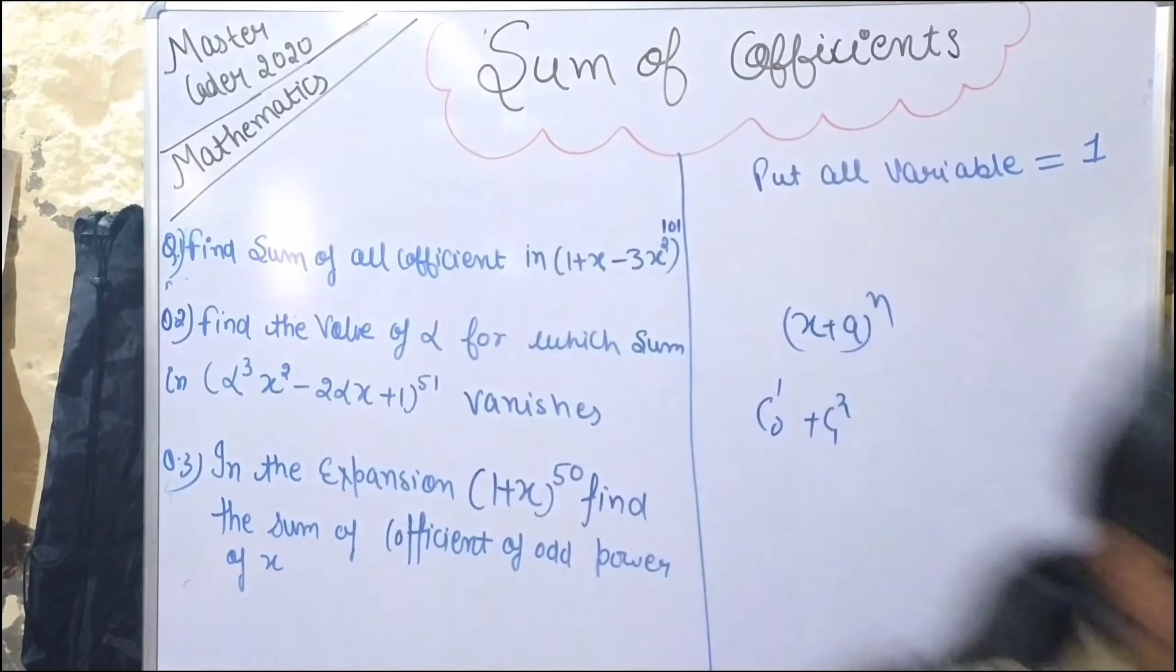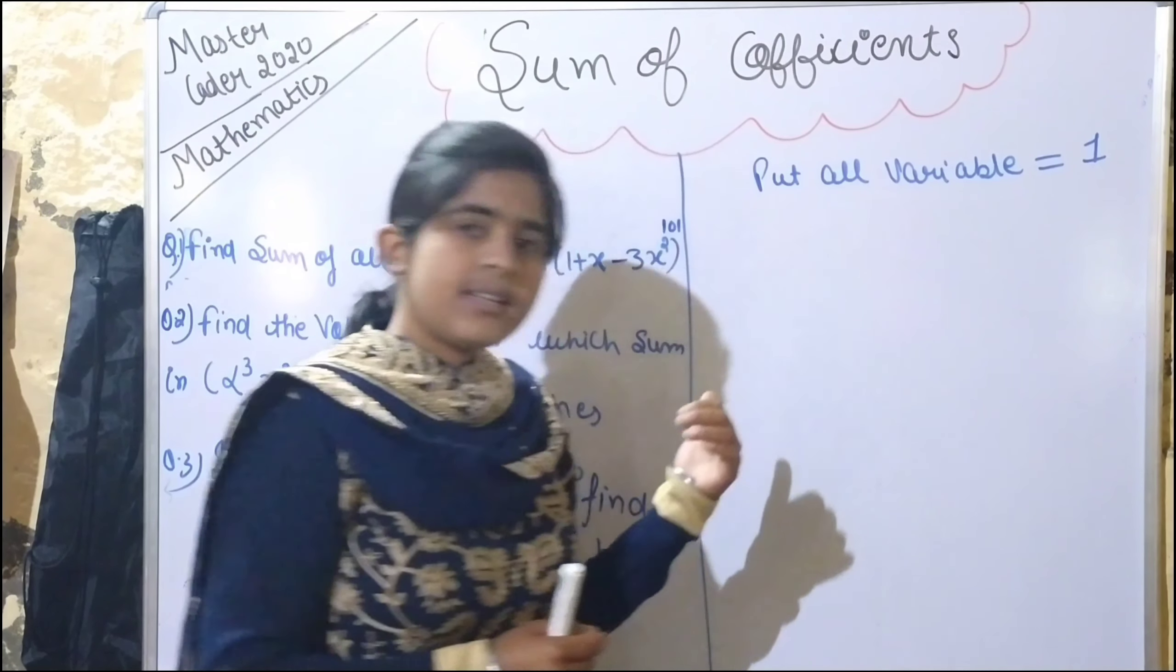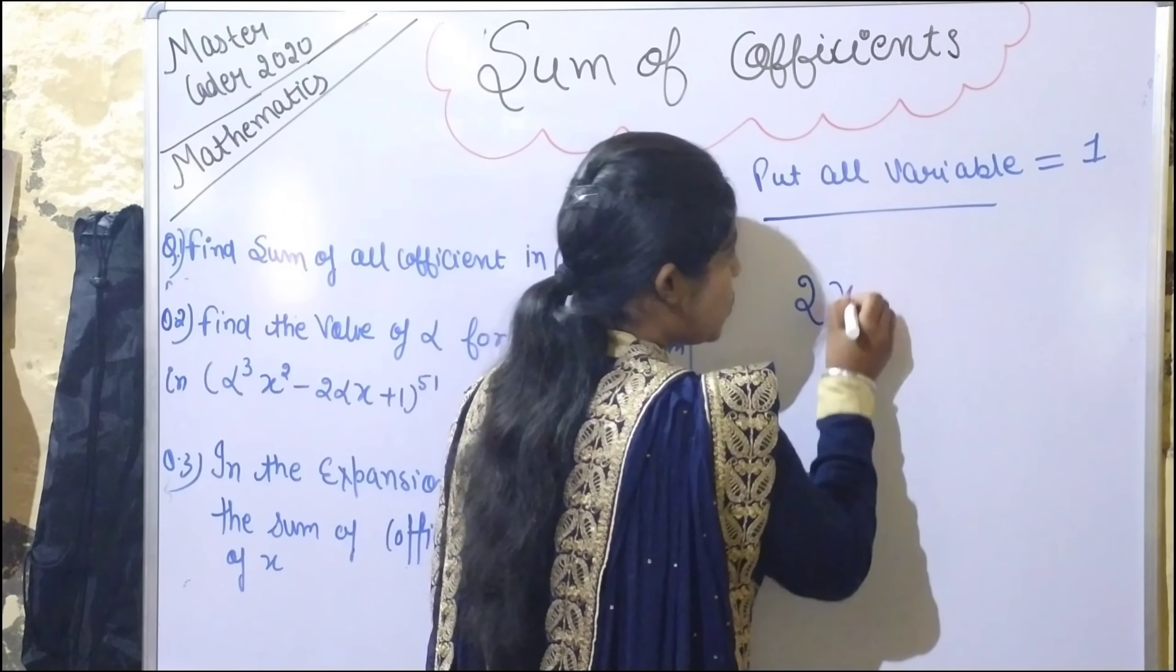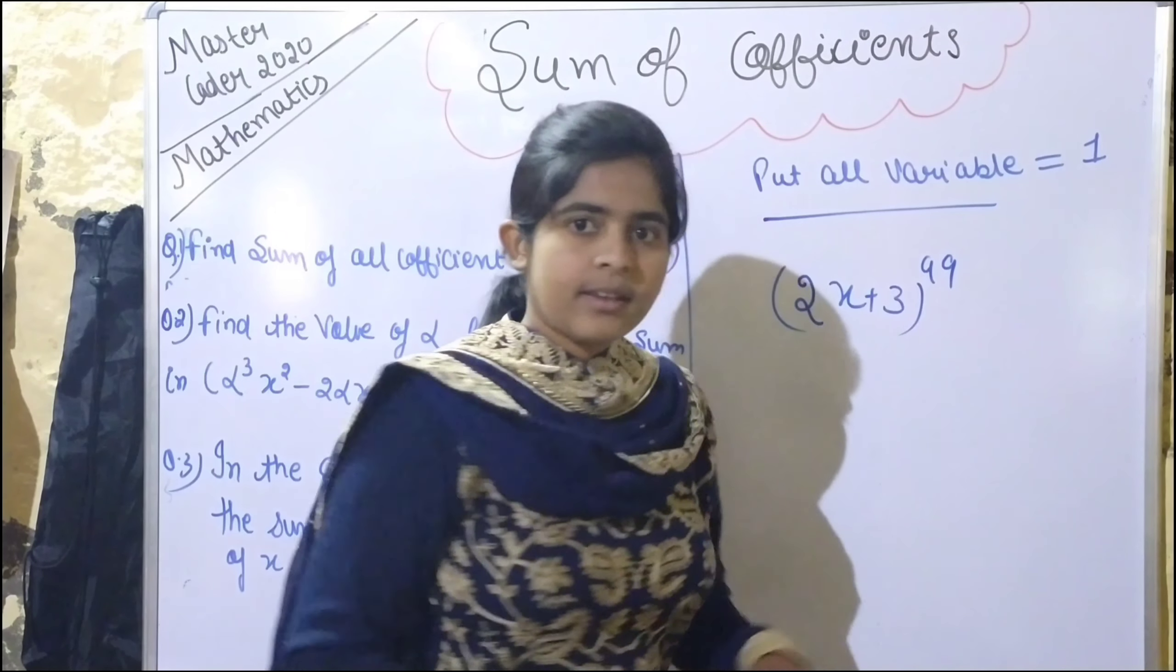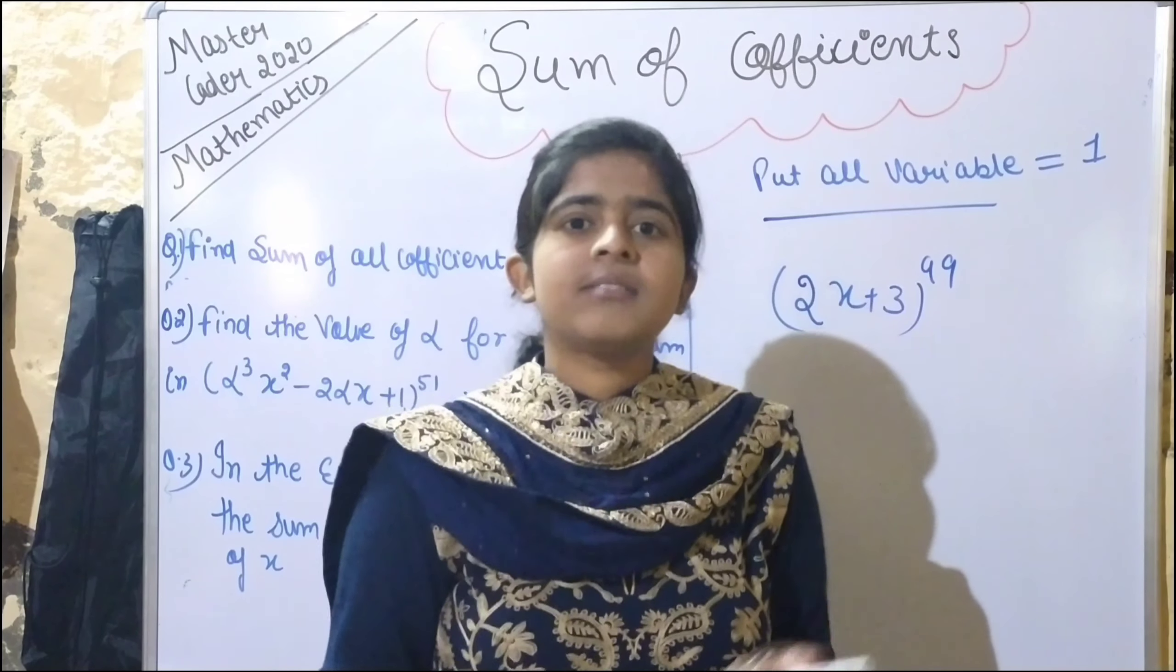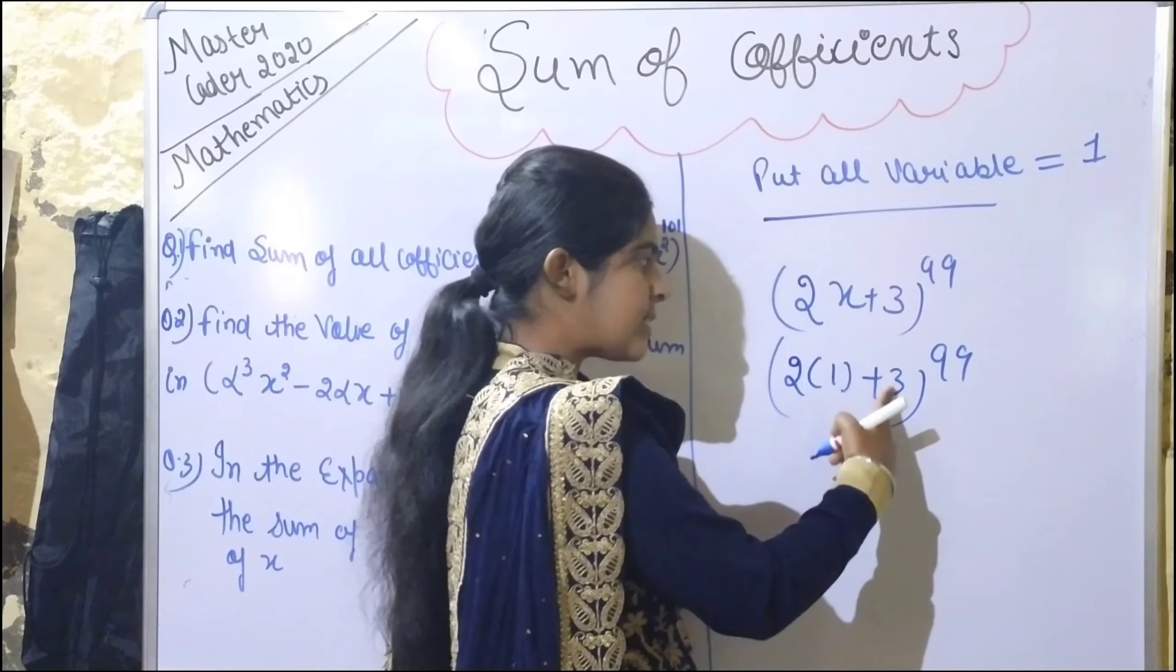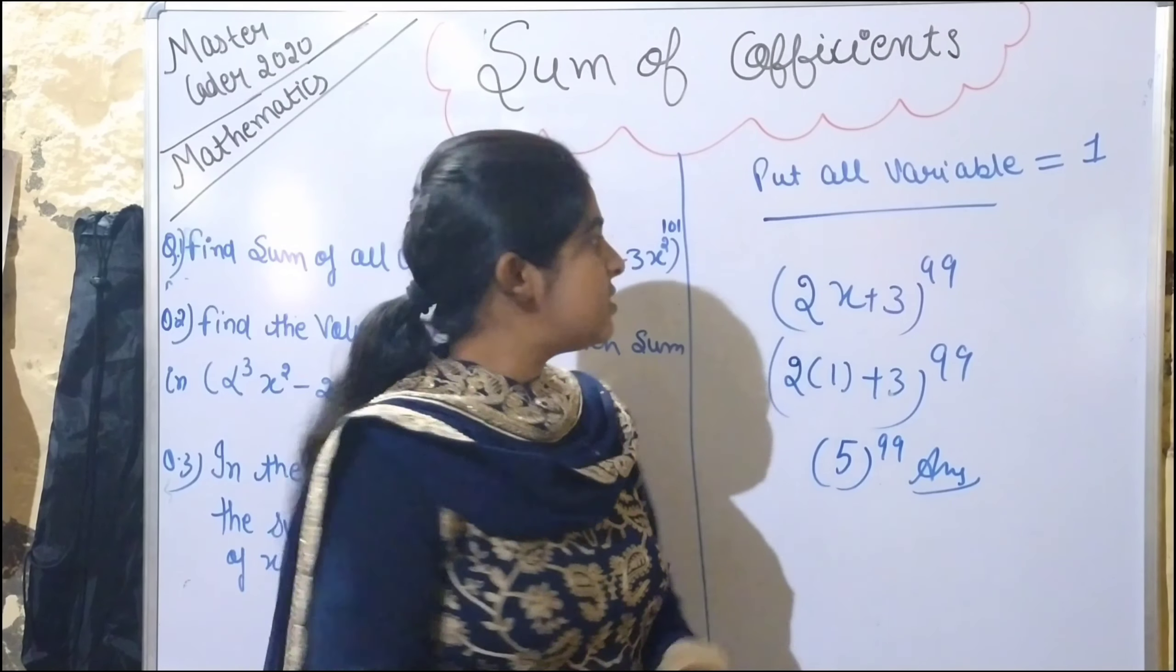But don't worry, I have a short trick for you. It will be done in seconds. What you have to do is very simple: whatever variable is there, just put it equal to one. For example, if the expansion is (2x + 3)^99, just put x equal to 1. So we get (2(1) + 3)^99 = 5^99. That's your answer—so easy and simple.